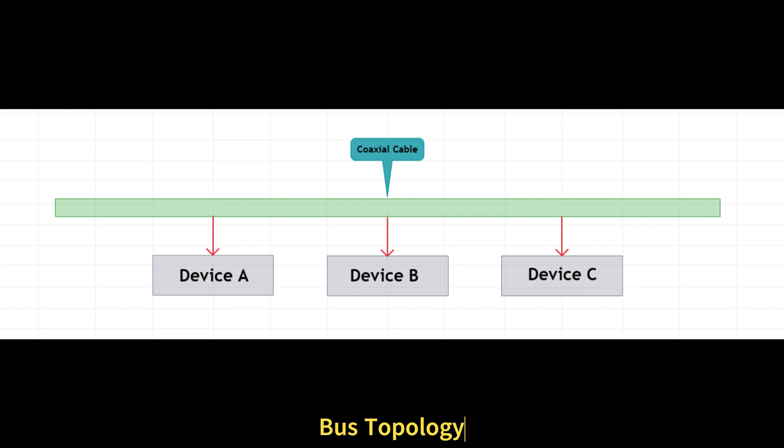Linear topology, bus topology. In this topology, communication takes place over a line. Devices connected to a coaxial cable communicate with each other over that cable. In this topology, communication is done sequentially, i.e., computer A cannot send data directly to computer C. It has to pass through computer B first.